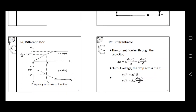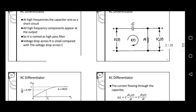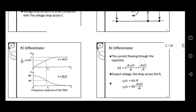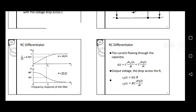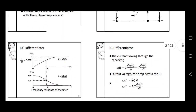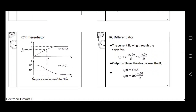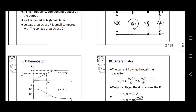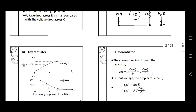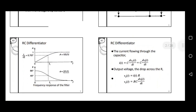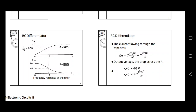Here we can see some important derivations. The current flowing through the capacitor, i(t), can be given as C into dVc(t)/dt. Using this differential equation, if the voltage across the capacitor Vc(t) equals the input voltage Vi(t), then i(t) equals C into dVi(t)/dt. The output voltage, the drop across R, can be given as V0(t) equal to i(t) into R. Substituting the value of i(t), we get V0(t) equal to RC into dVi(t)/dt.